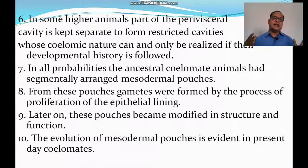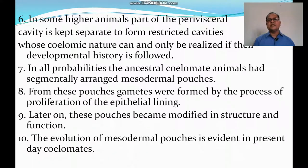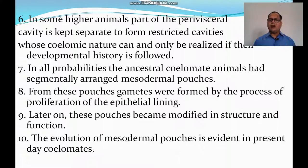In some higher animals, part of the perivisceral cavity is kept separate to form restricted cavities whose coelomic nature can only be realized if their developmental history is followed. In all probabilities, the ancestral coelomate animal had segmentally arranged mesodermal pouches. From these pouches, gametes were formed by proliferation in the epithelial lining. Later on, these pouches became modified in structure and function. The evolution of mesodermal pouches is evident in present-day coelomates.